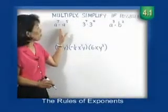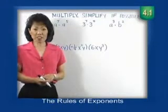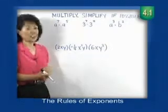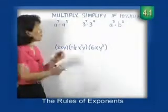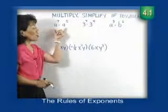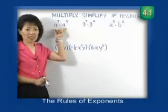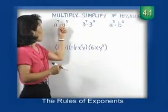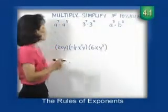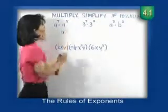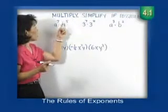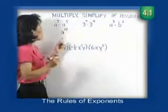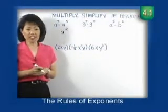In this first set, we're going to multiply and simplify if possible. Let's look at our first example: a to the seventh times a to the fifth. The rule to remember is this — as long as the bases are the same, all you have to do is add the exponents. In this case, the base is a, we add 7 plus 5, which is 12. So a to the seventh times a to the fifth is a to the twelfth.